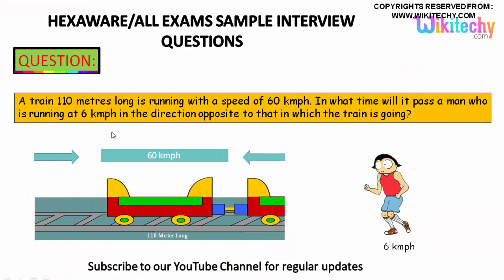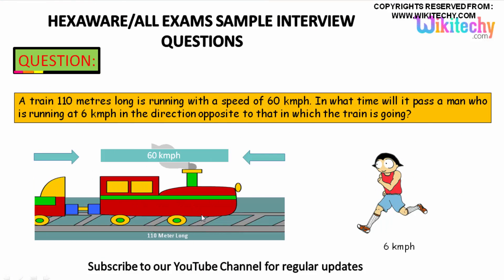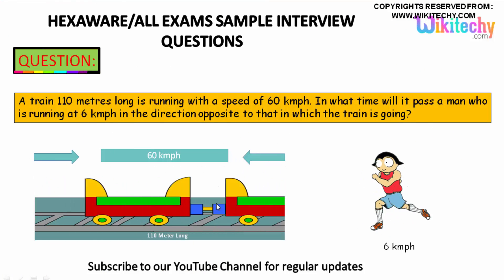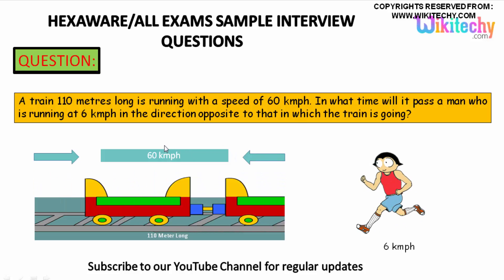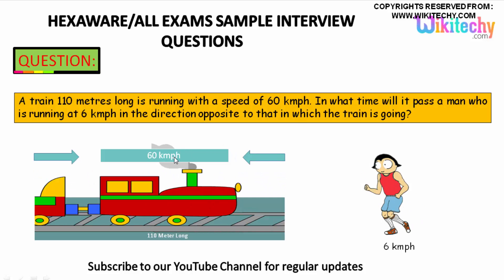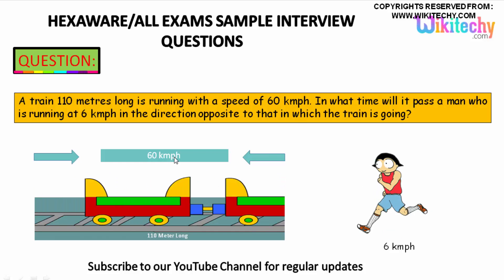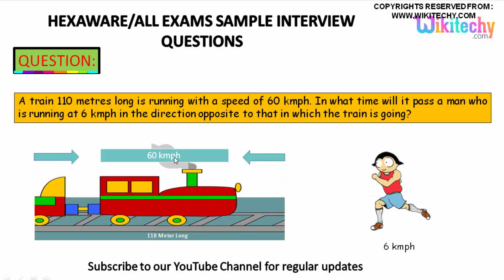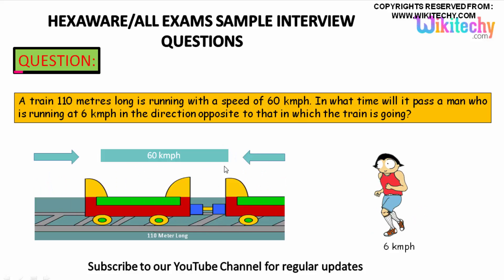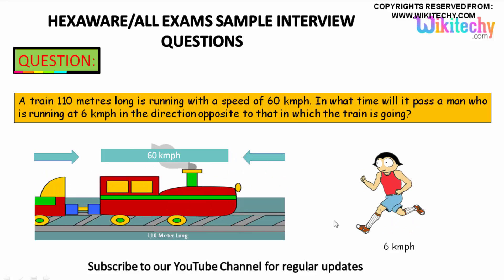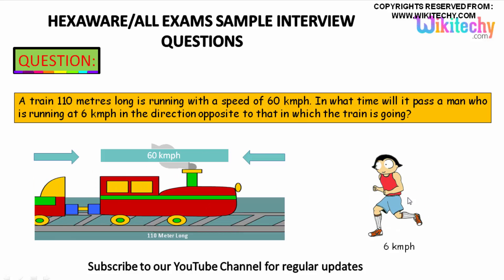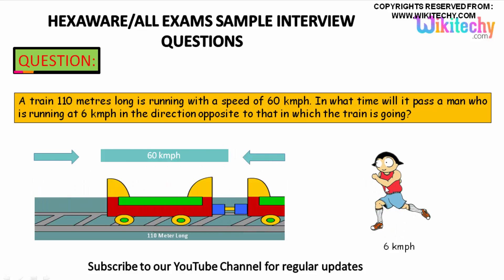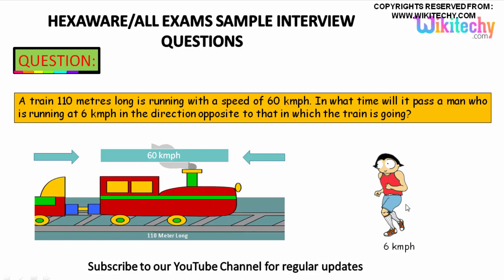Here is the question: a train 110 metres long is running with a speed of 60 km per hour. In what time will it pass a man who is running at 6 km per hour? They are going in opposite directions.